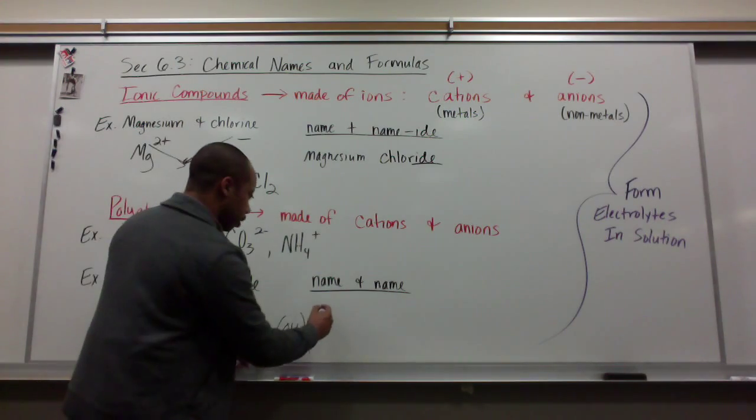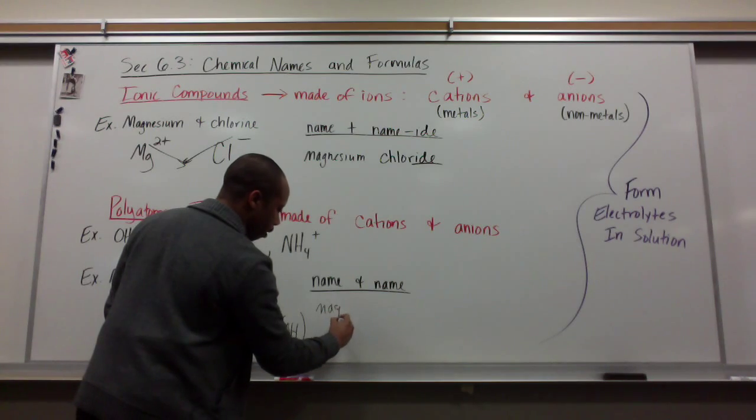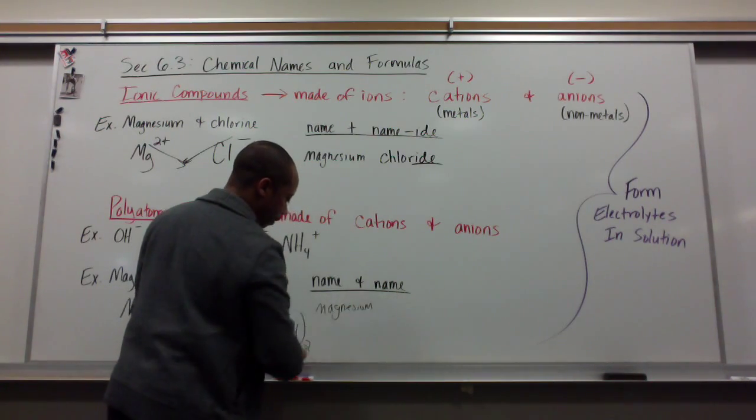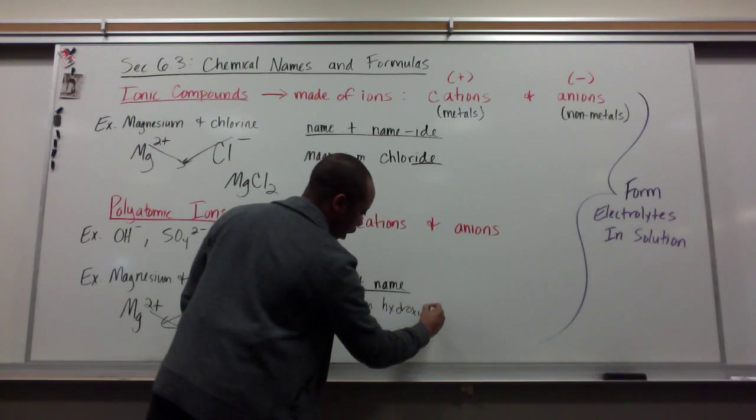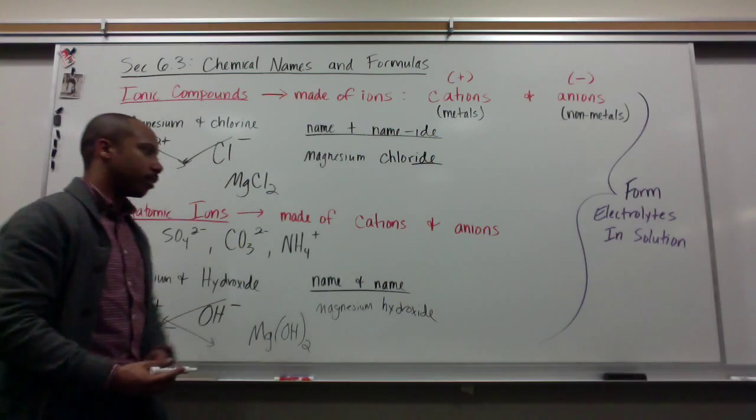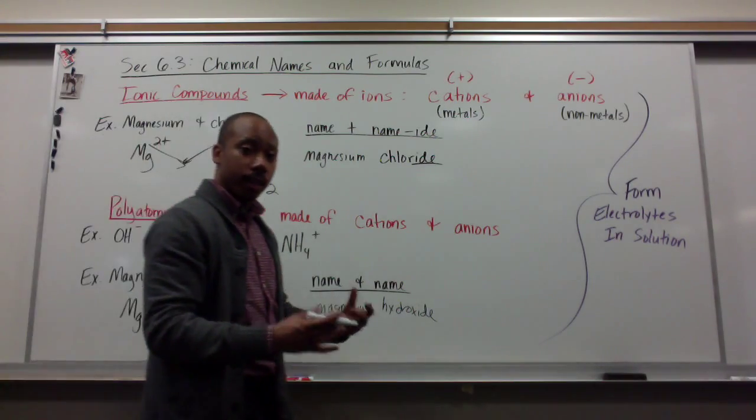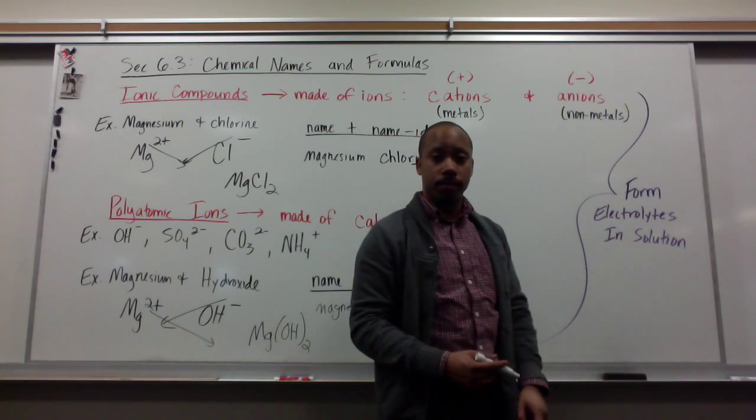This creates an electrically neutral compound. We name this by taking the name of one, magnesium, and we add to it the name of the other one, hydroxide. Magnesium hydroxide. When ions are dissolved in a solvent, they form electrolytes when they're in solution.